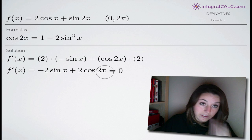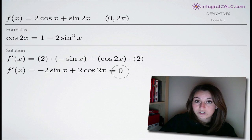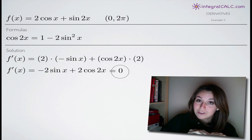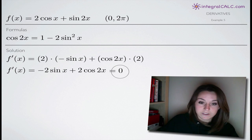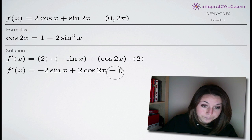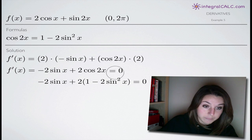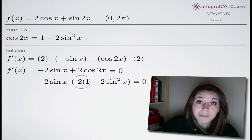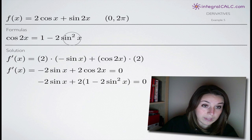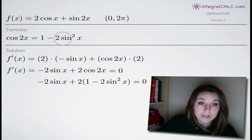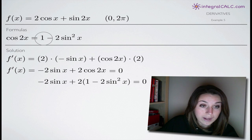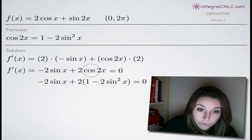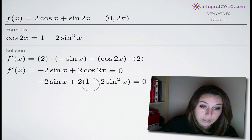Remember, they've asked us to solve for the points at which the derivative is equal to 0, or the slope of the tangent line is 0. We go ahead and set this equal to 0. Now, we're going to solve for x by simplifying everything on the left-hand side. In order to do that, the first thing we're going to do is make our substitution using our double angle formula. We said that cosine of 2x was equal to 1 minus 2 times sine squared of x, so I'm going to go ahead and plug in this whole thing for my cosine of 2x.